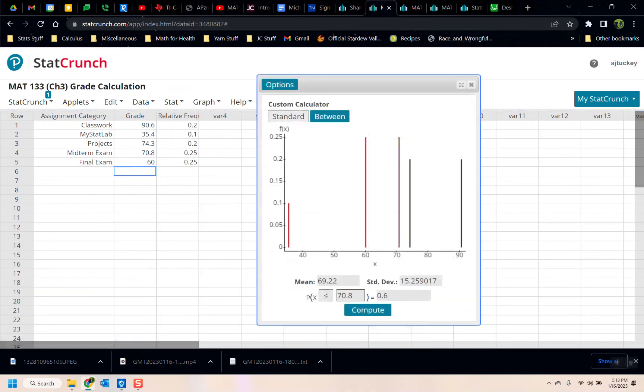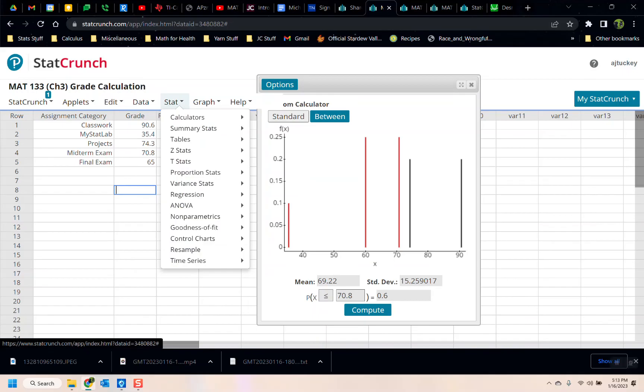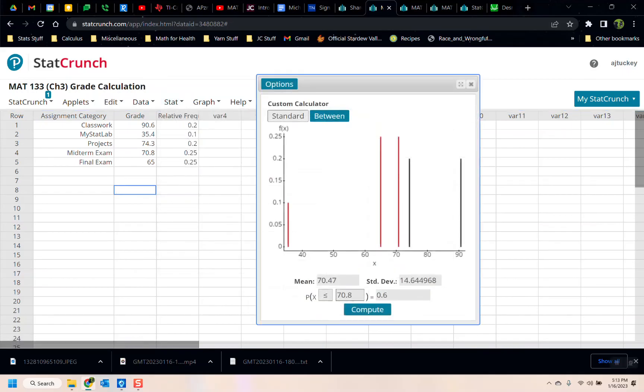Options, Refresh. Oh, we're getting really close. A 60 gave us a 69.22. So let's try 65. And then, Options, Refresh. Okay, that's over. So that's good. So 65 will do it. What about 64? Because we want the minimum number.